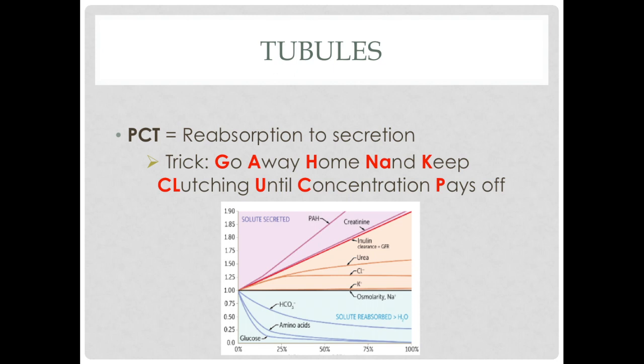A lot of things happen in the PCT. The trick to know the concentrations of reabsorption to secretion in that order is the mnemonic: 'go away home and keep clutching until concentration pays off.' In the image below, from the bottom up, all of this represents glucose, amino acids, bicarbonate, sodium, potassium, chloride, urea, inulin or GFR, creatinine, and para-aminohippuric acid or PAH.